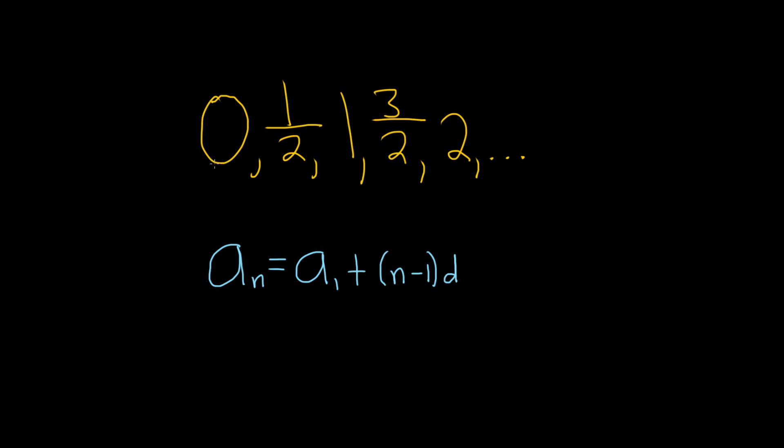So for example, to get from 0 to 1 half, we add 1 half. And then notice, if we add 1 half again, we get 1. We add 1 half again, we get 3 halves.